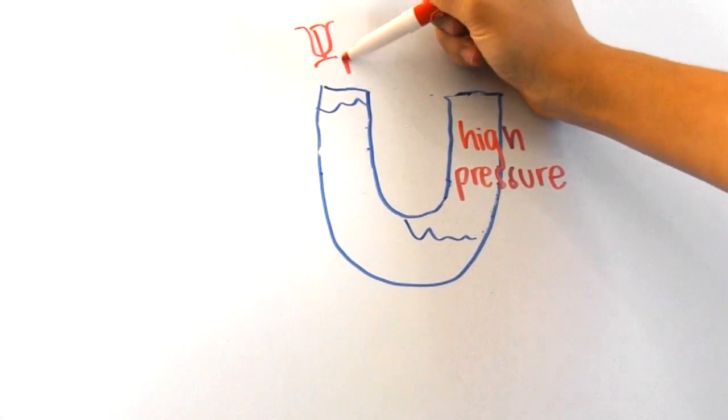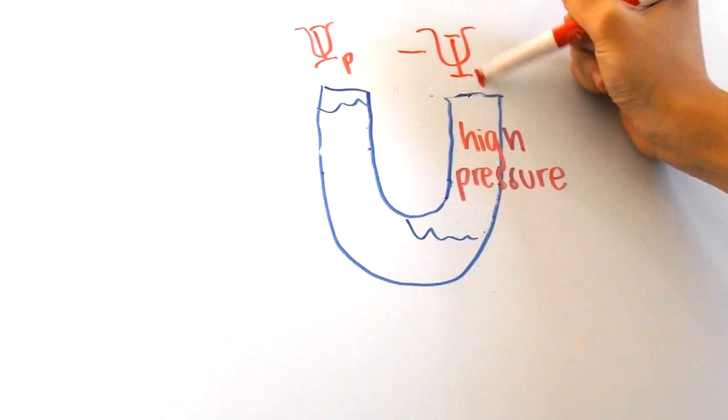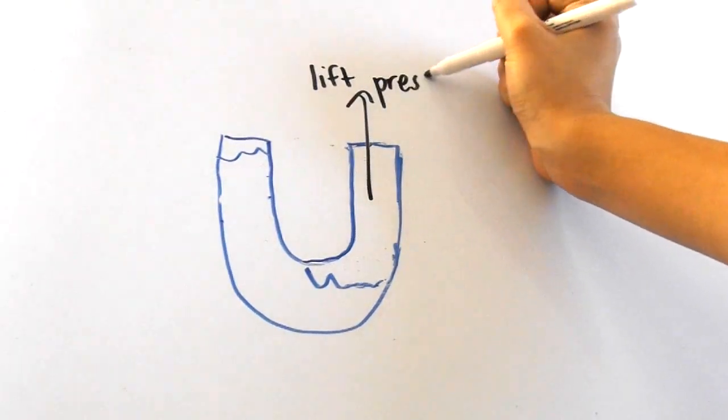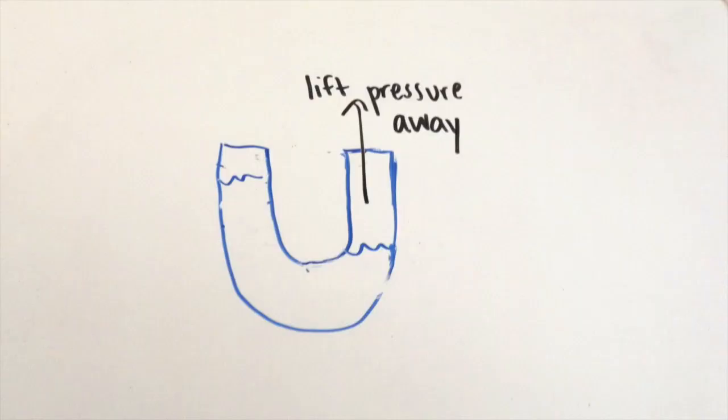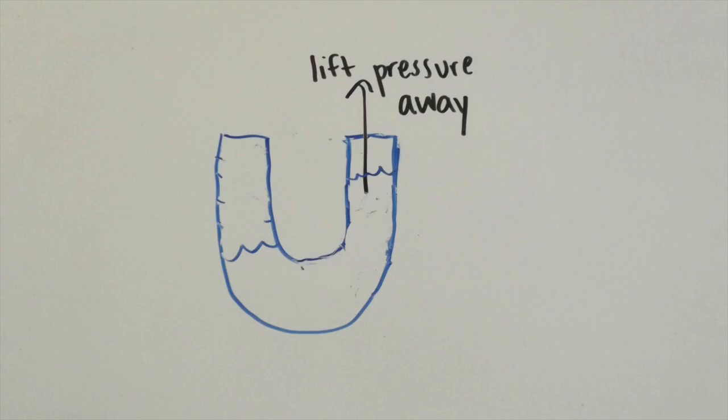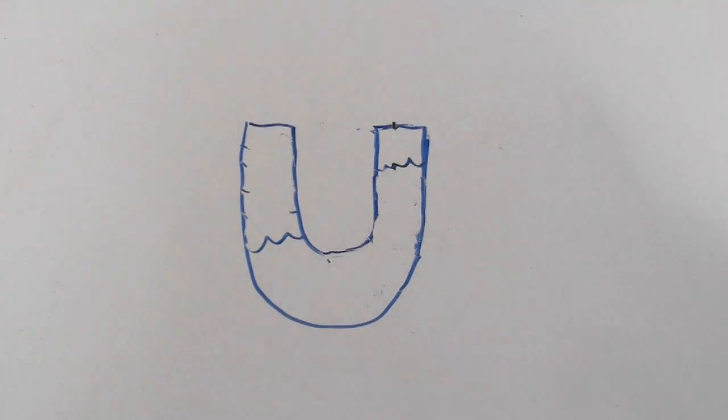When we apply pressure, pressure potential decreases too. But when we lift away pressure, pressure potential goes up. This can cause one side to have higher water potential than the other, therefore making the water go that way.